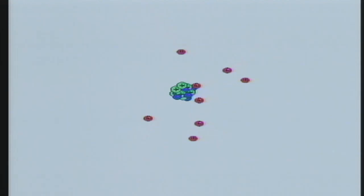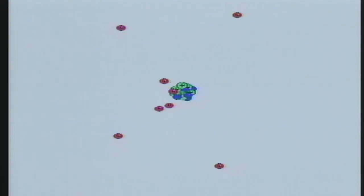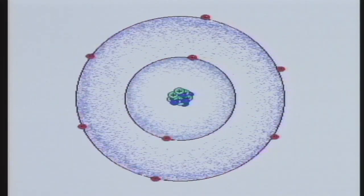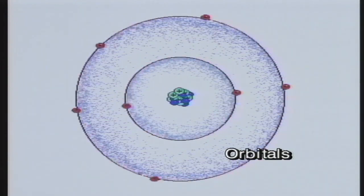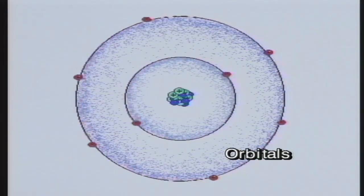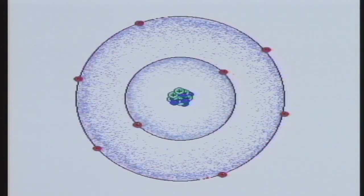Because electrons travel extremely fast, it's difficult to predict where electrons are at any moment. The regions where electrons are likely to be found are called orbitals. In this model, the regions look like clouds. These orbitals are also called electron clouds.